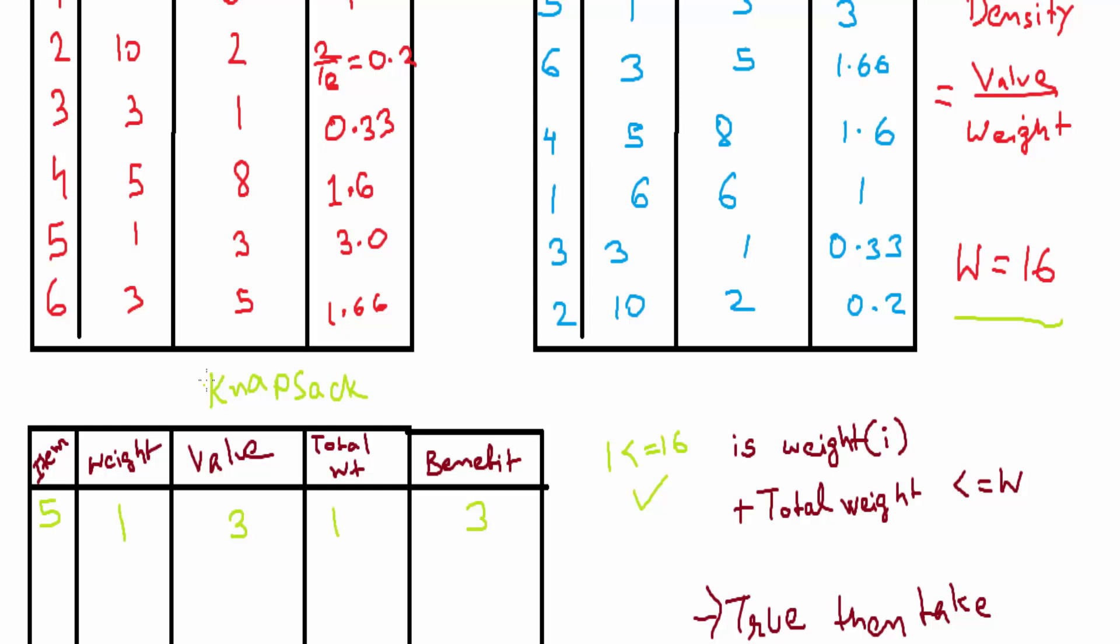Now we'll add item 6. Item 6, weight is 3, its value is 5. The total weight becomes 4. Let us see, 1 plus 3 equals 4, which is less than or equal to 16. Yes, it is true. So we'll take the whole item. Its benefit will be cumulative. We'll add 3 plus 5, that is 8.